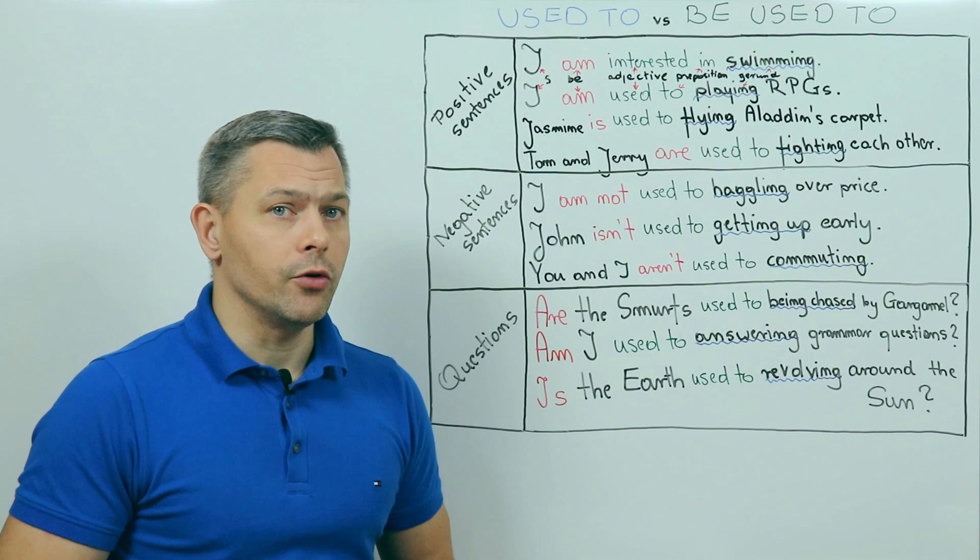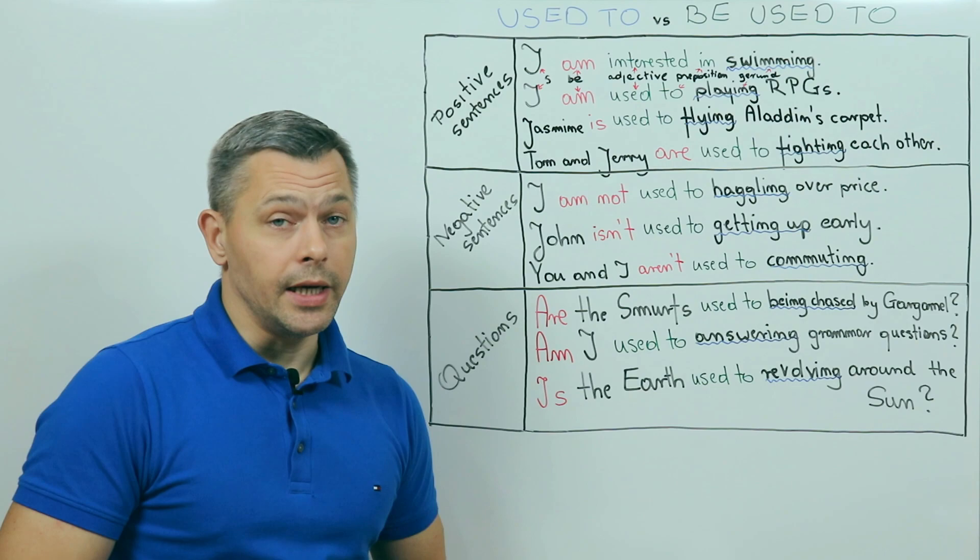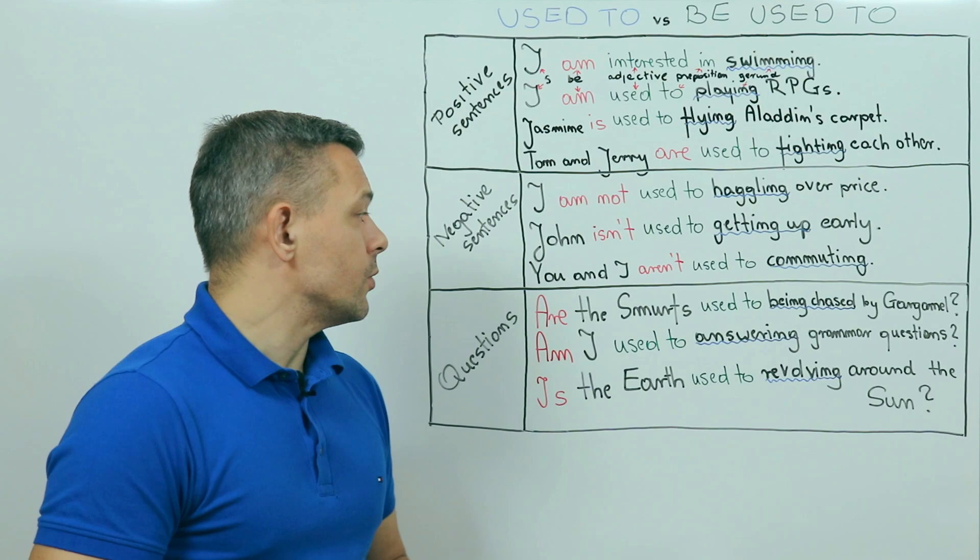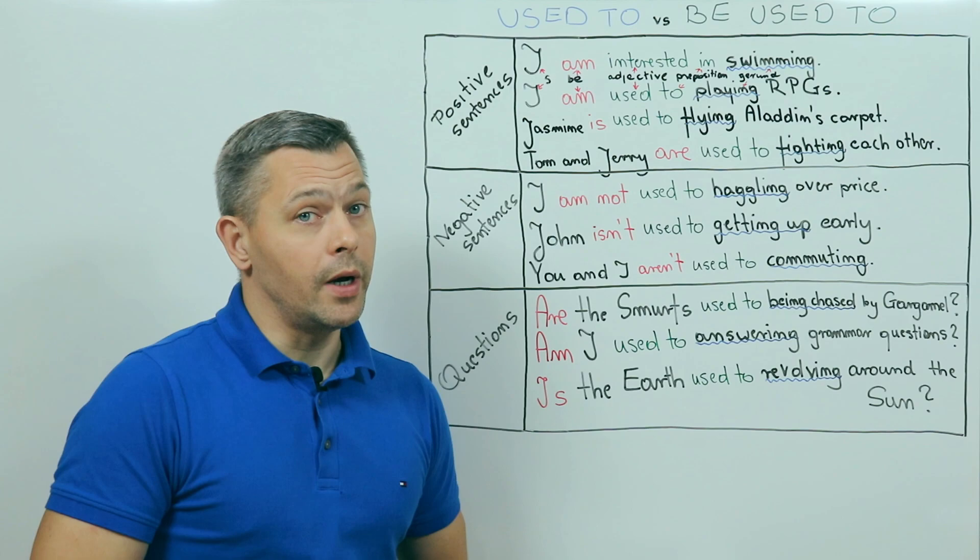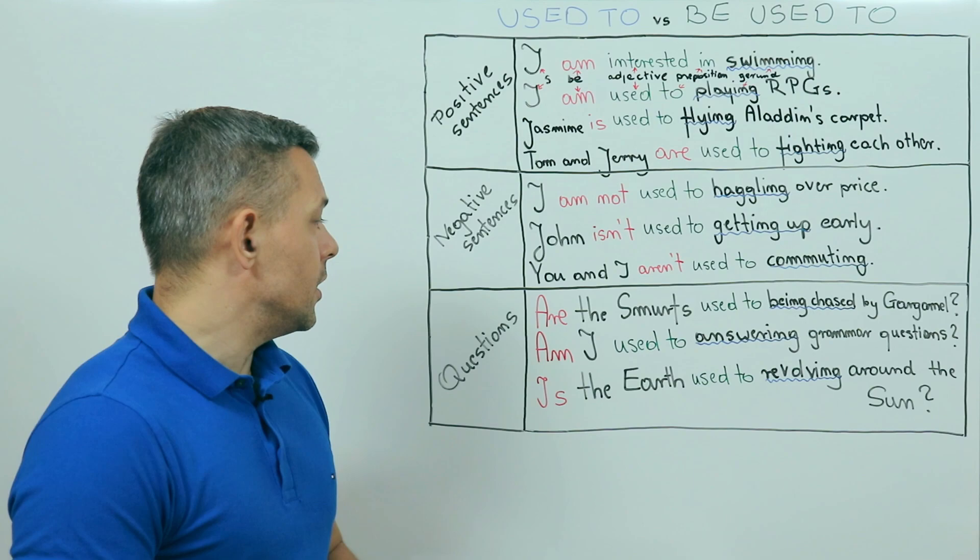Example number two. Am I used to answering grammar questions? Am I accustomed to it? Yes, I am. It is my passion. It is my job. I have been doing it for over 10 years. I do it on a daily basis. Practically 7 days a week. So, yes, Conrad is used to answering his students' questions about grammar. And the final example. Is the Earth used to revolving around the Sun? Well, knowing that it has been doing so for 4.5 billion years, I think that you will agree that we can say that it is. So, the Earth is accustomed to orbiting the Sun, the only star in our solar system. Our planet is used to this journey, taking it 365 days.